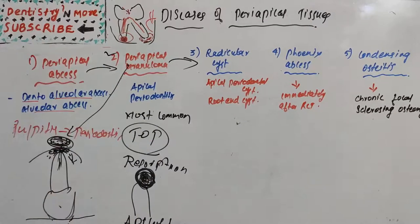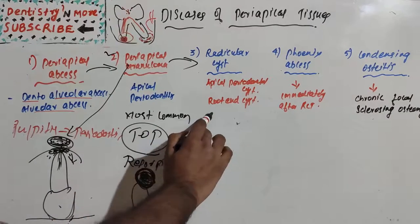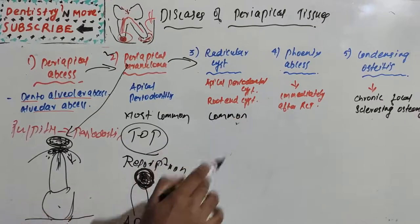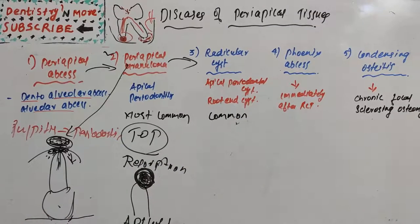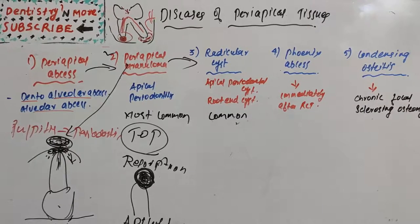Radicular cyst, also known as apical periodontal cyst, periapical cyst, or root end cyst, is the most common cyst of tooth origin. It may be due to bacterial infection, necrosis of dental pulp, and involvement of a carious tooth. There is proliferation of epithelial rests in the periapical area involved by granuloma, and the epithelial proliferation follows an irregular pattern of growth.